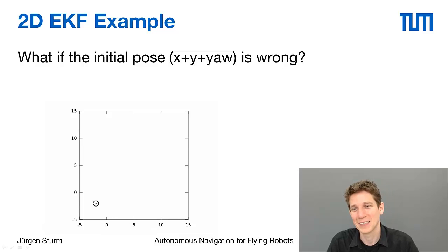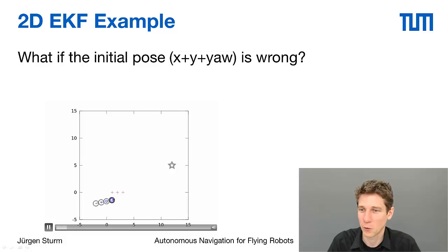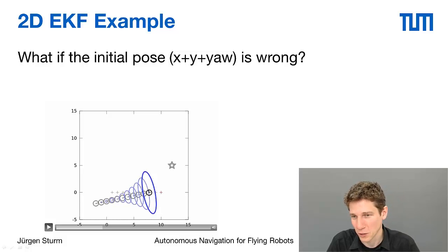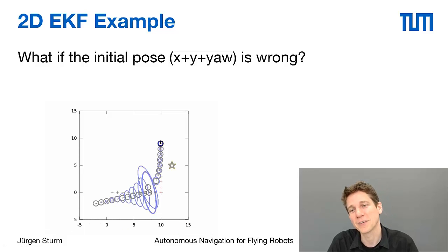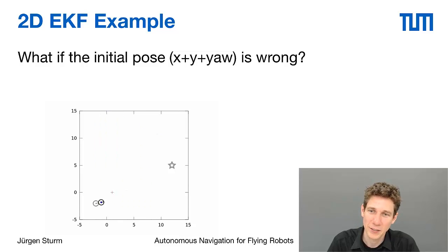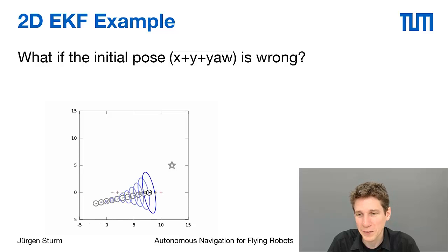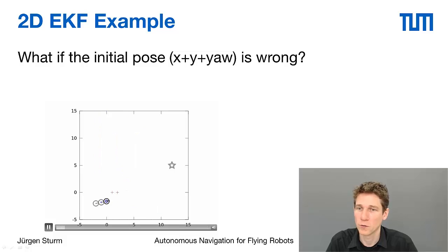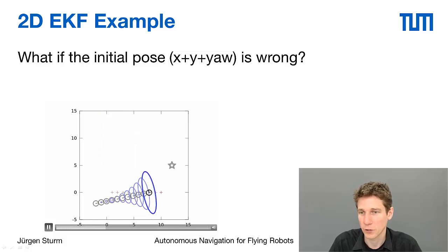We additionally assume a noisy and incorrect yaw estimate, producing the large ellipsoid as before. We are relatively far from the true position indicated by the red cross. But as soon as the marker is detected, the Kalman filter pulls the estimate to the correct location and decreases the covariance appropriately. Then, as soon as visual contact to the marker is lost, the covariance grows again as seen before.